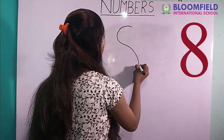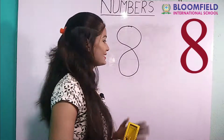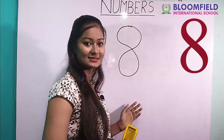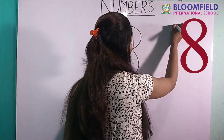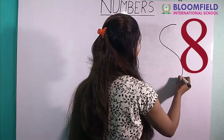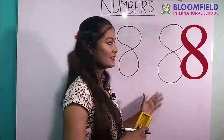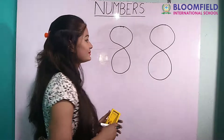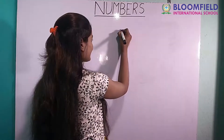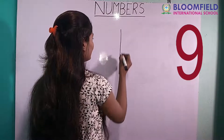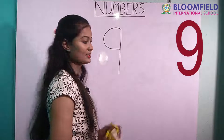Next: curve, then again curve — mix circle. This is eight. Curve, then again curve, mix. Eight.